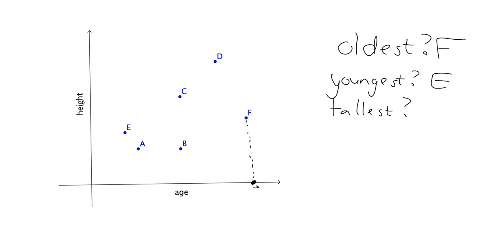Who's the tallest? Well, the height has been plotted on the vertical, and so the further up you are, the taller you are. So the furthest up person is D, and that's the tallest person.